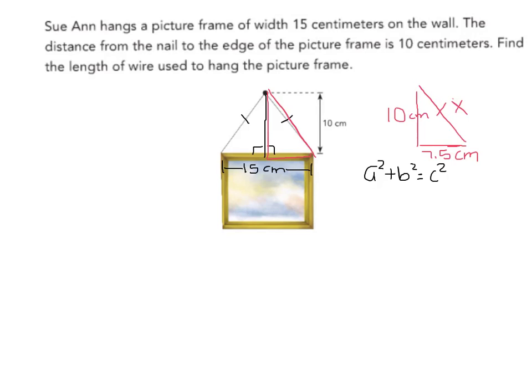And let's plug in what I know. So I know that my two legs are 10 and 7.5. And how do I know that those are my legs? I know those are my legs because this right here is my right angle and my hypotenuse has to be across. So my legs are going to be 10 and 7.5. So I have 7.5 squared plus 10 squared equals x squared.